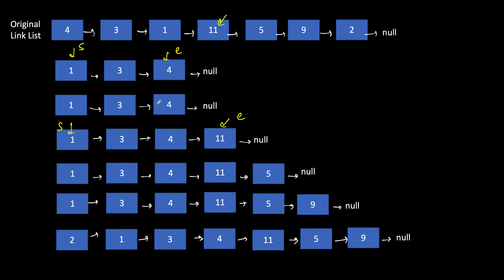When we move to 11, it is greater than x so it gets appended at the tail, and start remains the same. Similarly 5 gets appended at the tail, then 9 at the tail, and 2 prepends at the head. The relative order of the original linked list is not maintained — for example, 2 now comes before 1 — but the time complexity is also O(n) since we iterate the original linked list once and only change pointers.